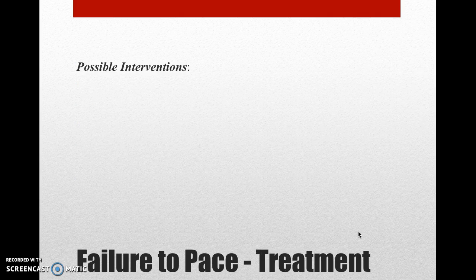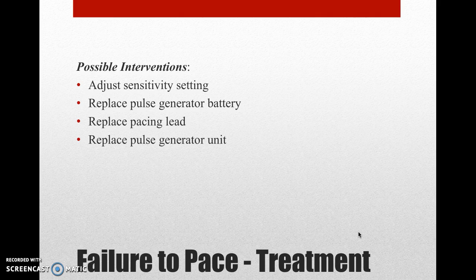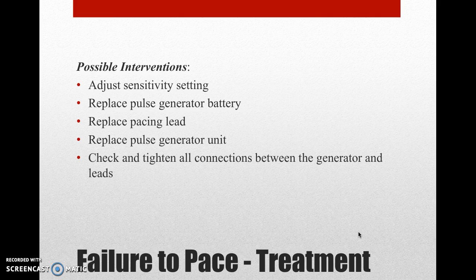The treatment for failure to pace includes the following possible interventions. Adjust the sensitivity setting. Replace the pulse generator battery. Replace the pacing lead. Replace the pulse generator unit. Check and tighten all connections between the generator and leads if you're using a temporary transvenous device.